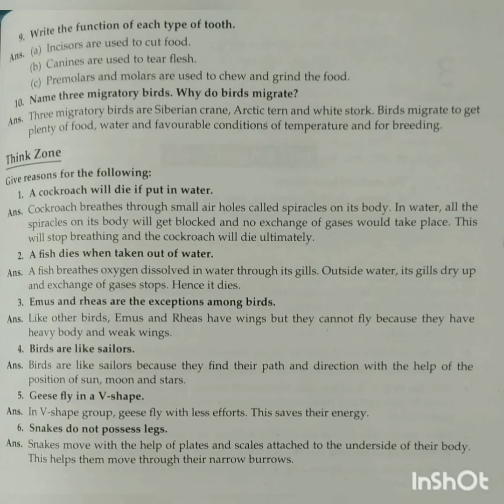Emus and rheas are exceptions among birds. Like other birds, emus and rheas have wings but they cannot fly because they have heavy bodies and weak wings. Their weak wings do not support their body weight, hence they cannot fly.